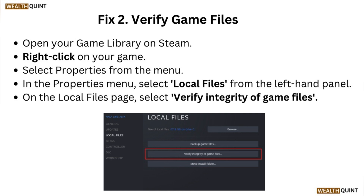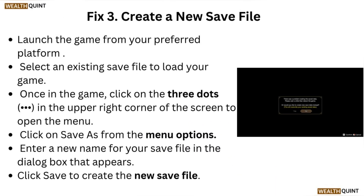Fix 2: verify game files. Open your game library on Steam, right-click on your game, and select Properties from the menu. In the Properties menu, select Local Files from the left-hand panel. On the Local Files page, select Verify Integrity of the Game Files.